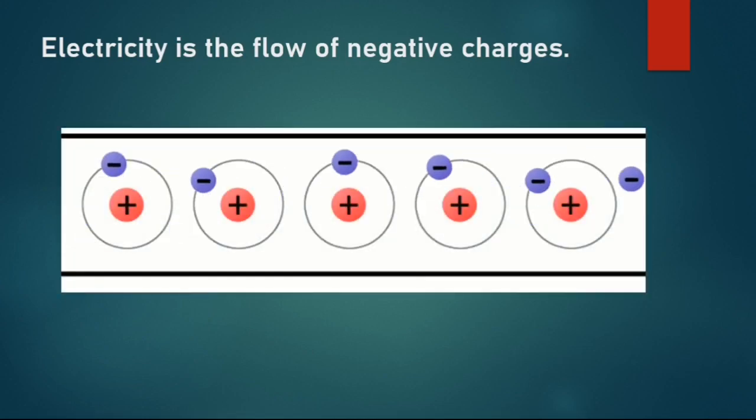We now have all the tools to make charges flow. Electrons in atoms can act as our charge carriers because every electron carries a negative charge. If we can free an electron from an atom and force it to move, we can create electricity.